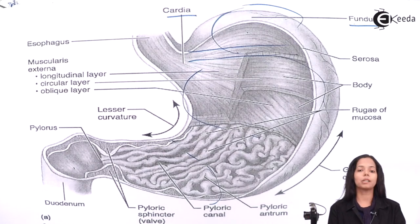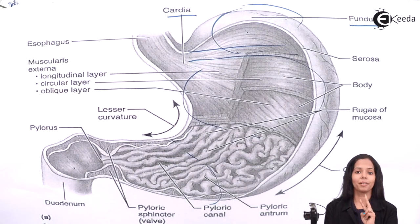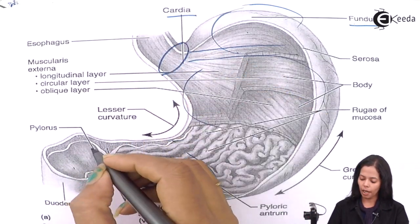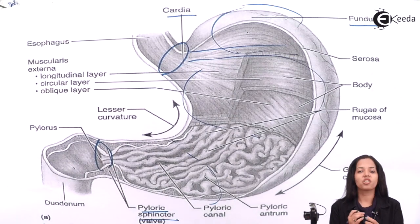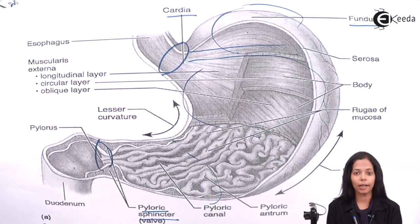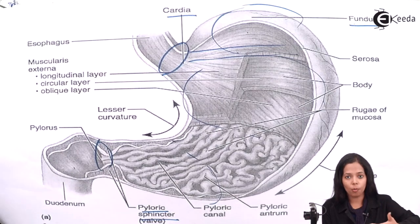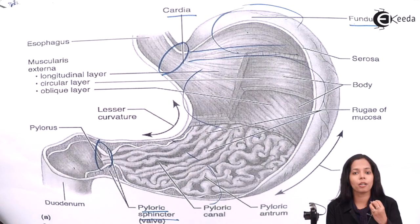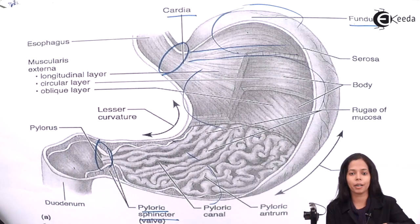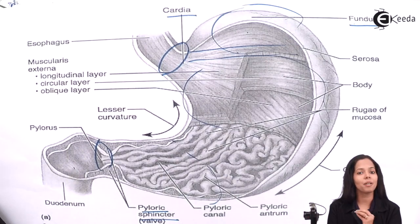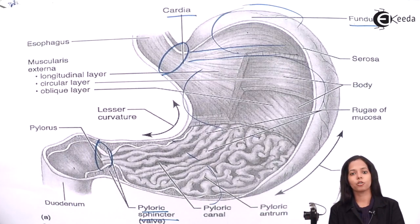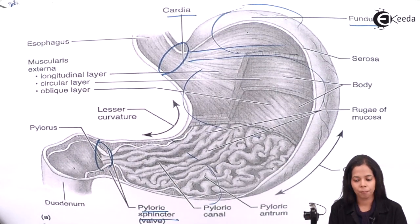Speaking about sphincter muscles in the stomach: there are two sphincter muscles present — one at the beginning and one at the end of the stomach. You can see it is labeled as the pyloric sphincter muscle. The function of the sphincter muscle is to regulate the flow of food. The next part of the digestive system requires a certain amount of food, and that amount is regulated by the sphincter muscle. The sphincter muscle at the end of the stomach is called the pyloric sphincter muscle.